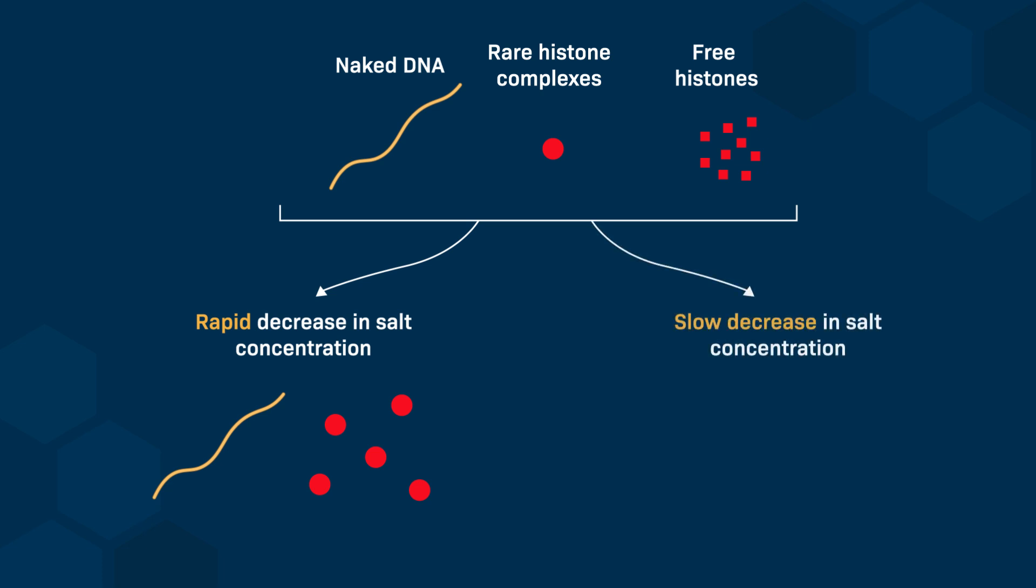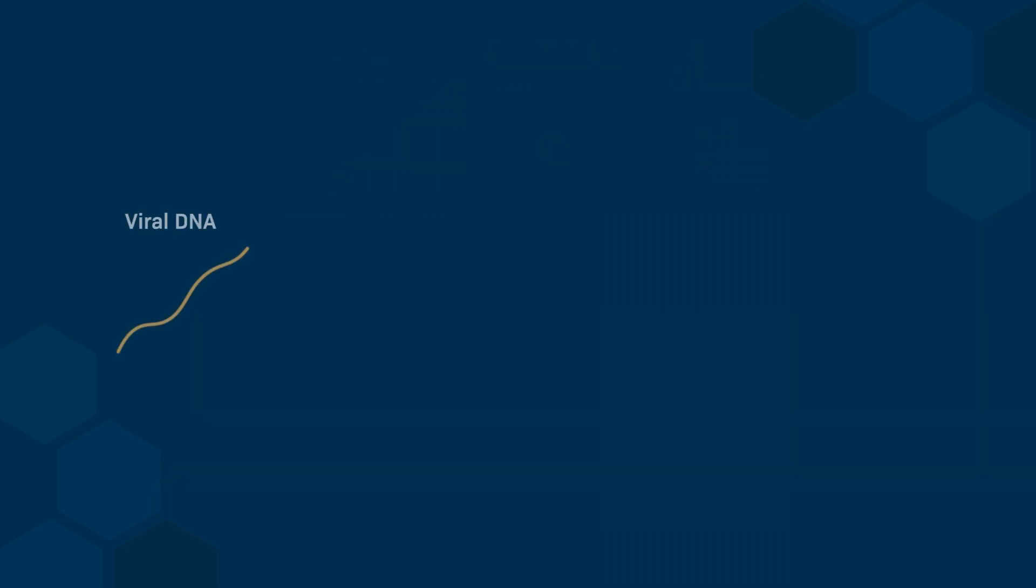However, a slow decrease in salt concentration enables the reconstitution of the 10 nm fiber. An interesting question is whether this process works only on histones and DNA of the same origin. The answer is no. For instance, starting with viral DNA mixed with histones from a chicken allows for the reconstitution of a chromatin fiber.